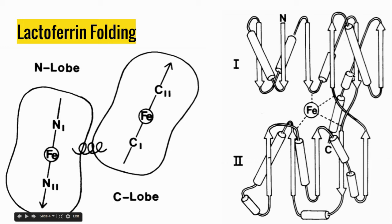There are about four parallel beta strands in the first domain, two anti-parallel, then four parallel in the second domain and one anti-parallel. This is the N domain, and you can see the C domain in the back. You can also see the iron that's bound right here.